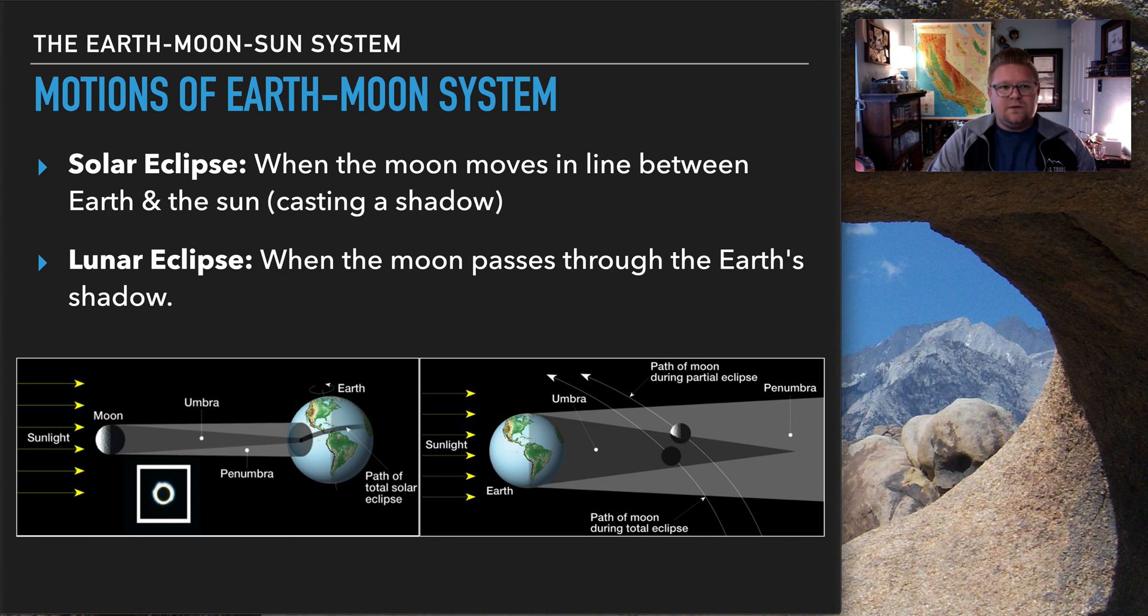Moving into this next piece, this is motions of the Earth again, looking at solar eclipse and a lunar eclipse. So a solar eclipse is when the Moon moves in line between the Earth and the Sun. Therefore, casting a shadow. And then a lunar eclipse is when the Moon passes through the Earth's shadow. So this first one here, as we can see, there's the sunlight. The sunlight is hitting the Moon. And you can see that then, therefore, there is a shadow being cast upon here. Then, looking here, we can see there's the sunlight shining on the Earth. And we can see then that there's the moons. We can't observe the Moon in that case. So I guess the big question for you is, based on these images, which one would be a solar eclipse and which one would be a lunar eclipse?